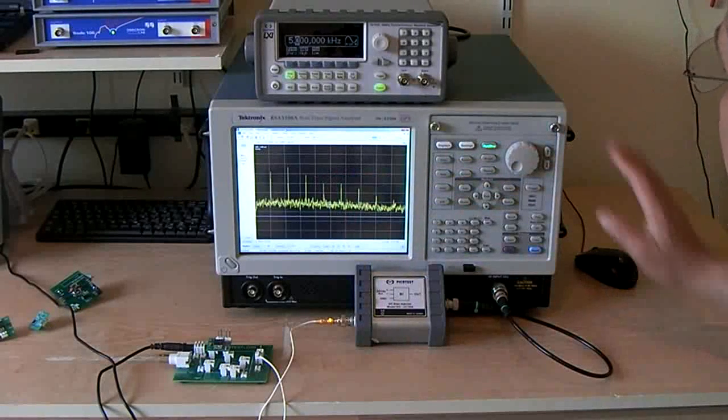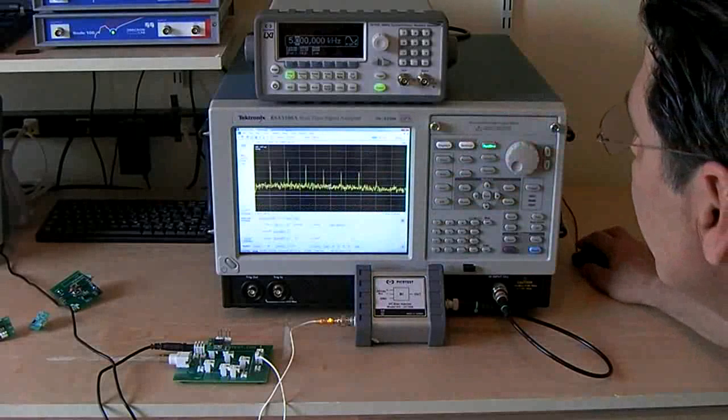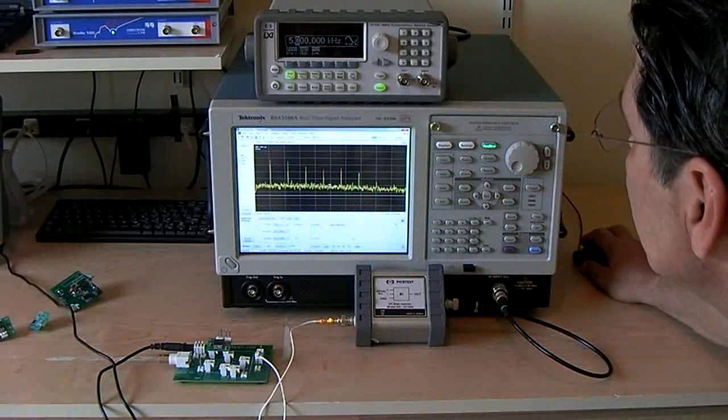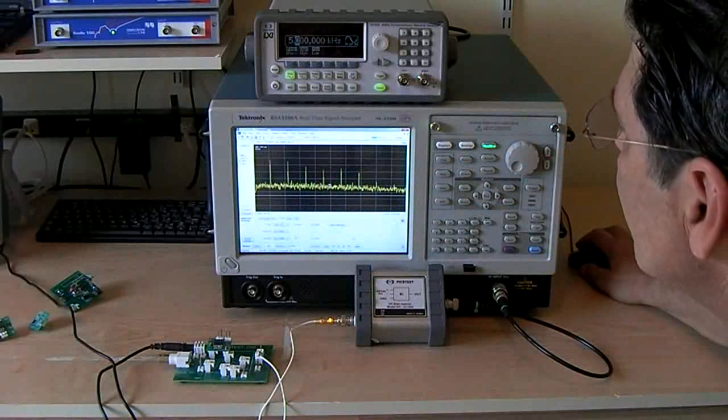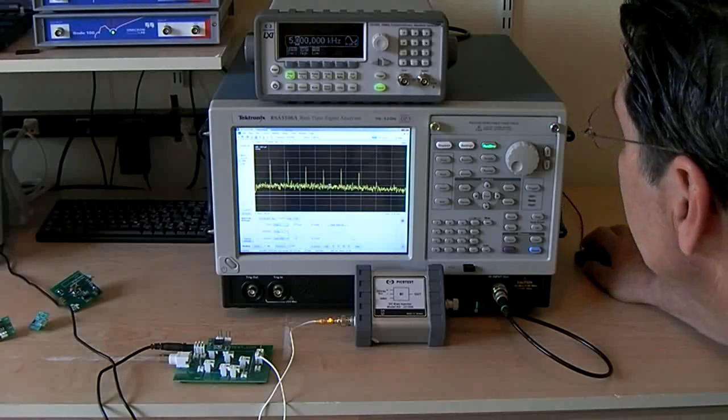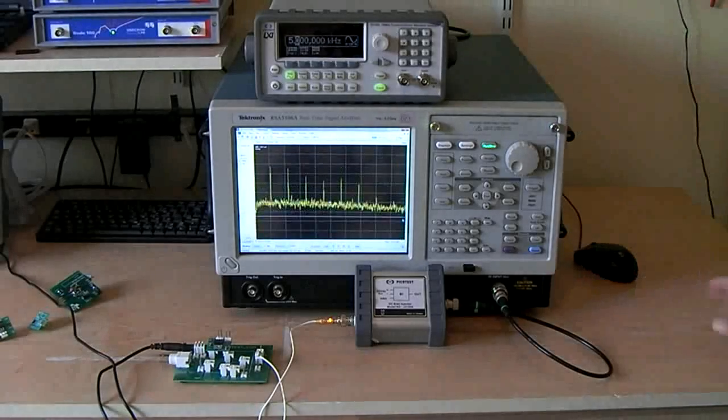In the meantime, we can go ahead and we can save this trace just so it doesn't go away. And we'll use a second trace to look at another regulator.